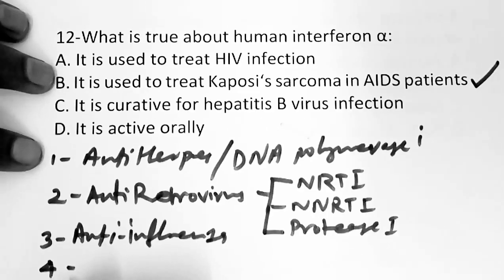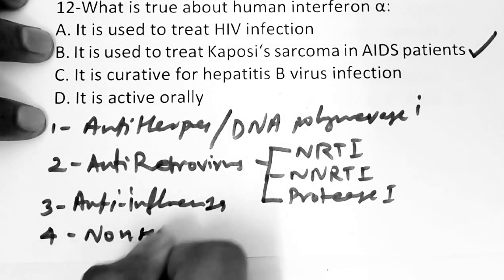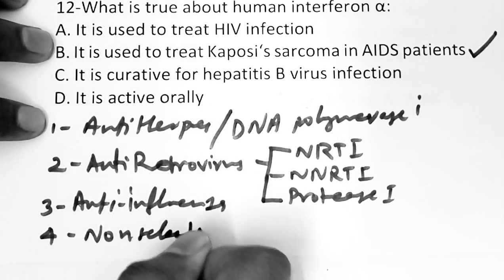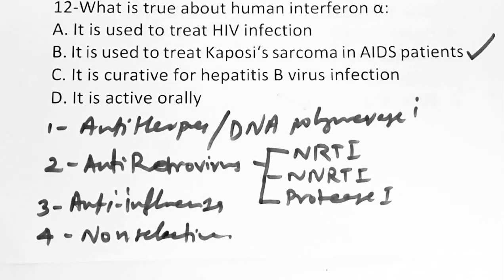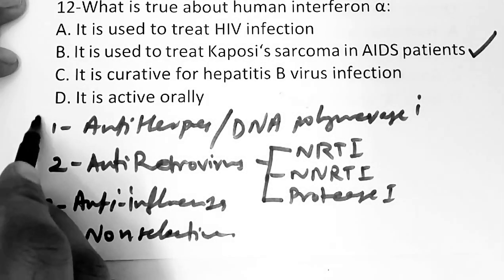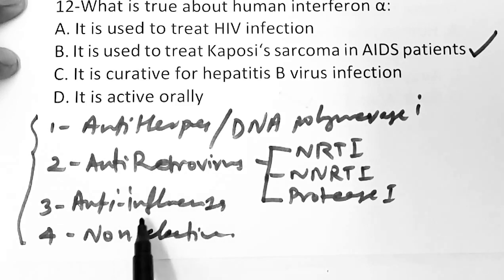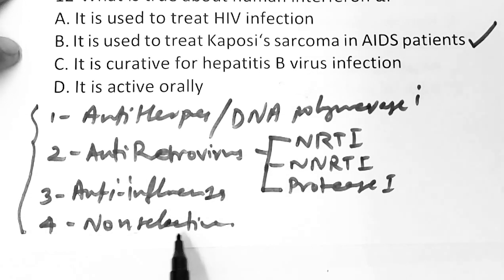The fourth and last category is non-selective antiviral drugs. Examples include ribavirin, interferon alpha, and adefovir. Immunomodulators are also included here — monoclonal antibodies, immunoglobulins, and interferons come under this classification as well. So these are the different classes of antiviral drugs: anti-herpes, antiretrovirus, anti-influenza, and non-selective.